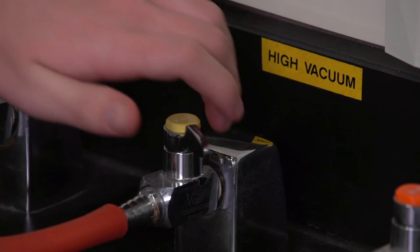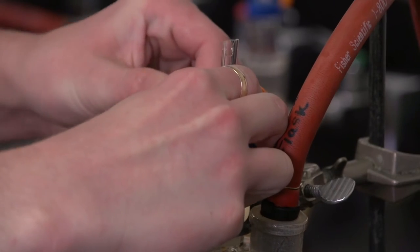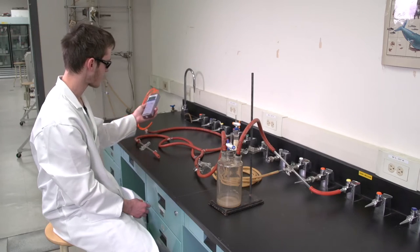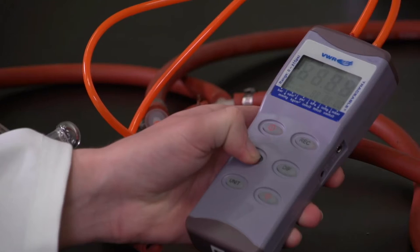To zero the manometer, make sure the vacuum is off and the system is open to the atmosphere. Turn on the manometer and push the hold button for 2 to 3 seconds.